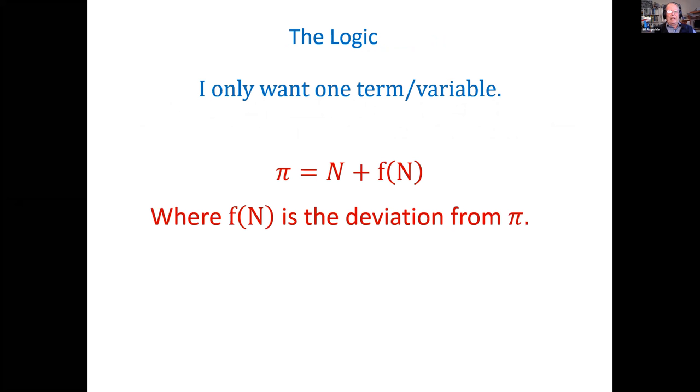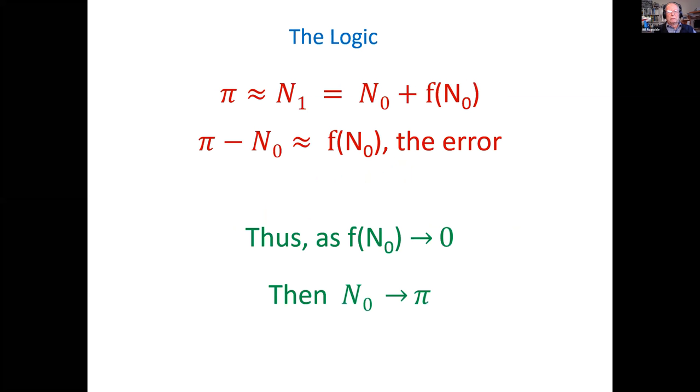Now, n is our desired value for pi. And f(n), the function of n, is the deviation from pi. So if we look down at the bottom, we're going to do it iteratively. Each term is the function of the prior term plus the function of n0. So as the function of n0 approaches zero, then n0 itself will approach pi.